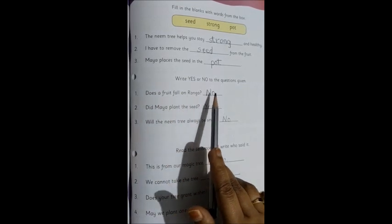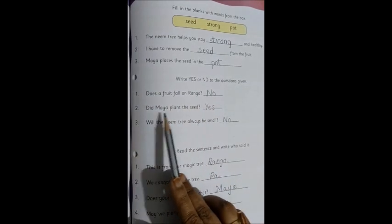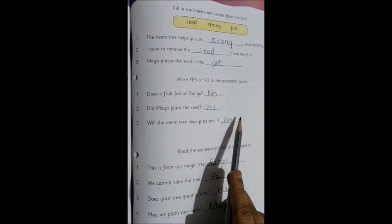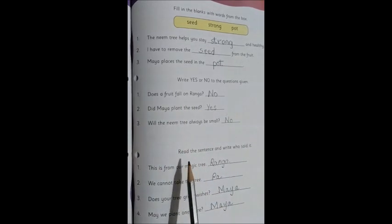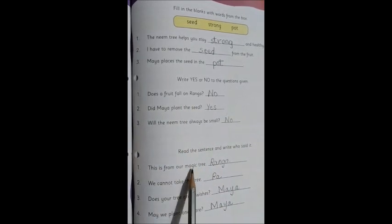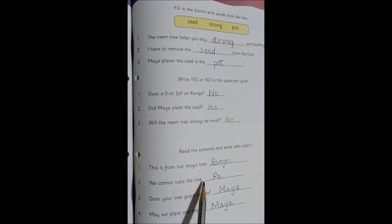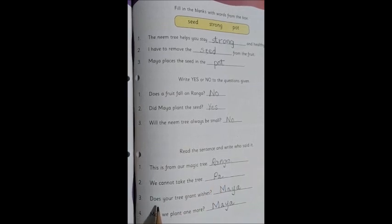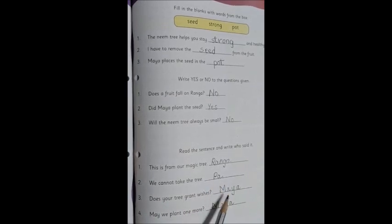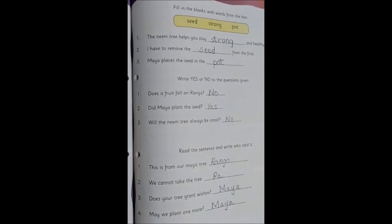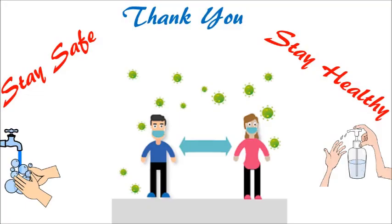Does the fruit fall on Ranga? No. Did Maya plant the seed? Yes. Will the neem tree always be small? No. Now the last one, who said to whom? This is from our magic tree. Who said? Ranga. We cannot take the tree. Pa. Does your tree grant wishes? Who says this? Maya. May we plant one more? Who says it? Maya.